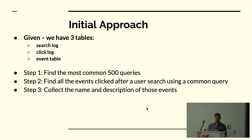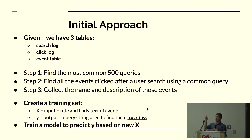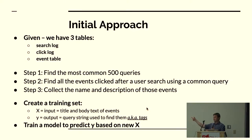Step one: find the most common 500 queries. Of those popular queries, find every event that was clicked on, and get the name, description, and whatever other information we think we need. That's our training set — the X input is the title and body of these events, and the output Y is the searches that led to those events.